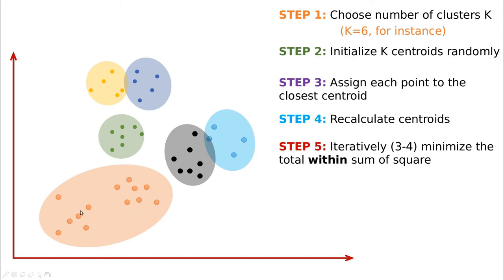Remember that we started with random initial centroids. One problem with k-means is that this random assignment of initial centers can change the result a lot. Imagine that by pure chance we have one centroid here and one centroid there — we'd probably get a cluster there, a cluster there, and these two forming another cluster independently. We cannot increase the number of groups in real time.